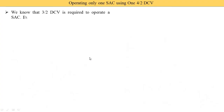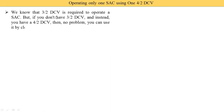We know that a 3/2 DCV — DCV means directional control valve — is required to operate a single acting cylinder. But if you don't have a 3/2 DCV and instead you have a 4/2 DCV, suppose the 3/2 DCV is not available and you have the 4/2 DCV, then how can you use the 4/2 DCV with a single acting cylinder?